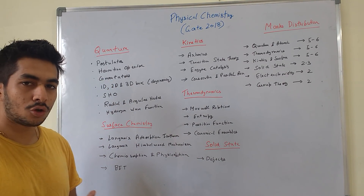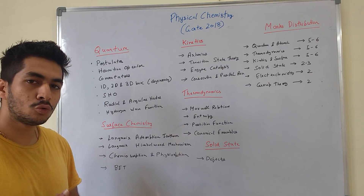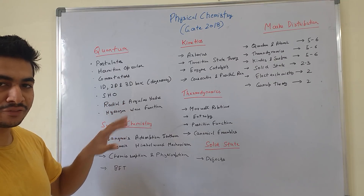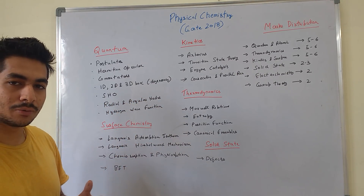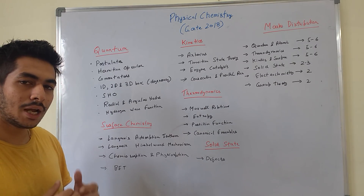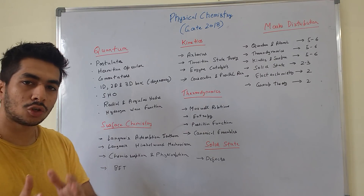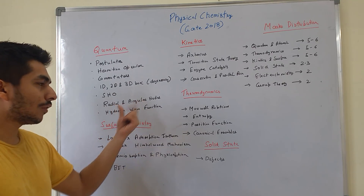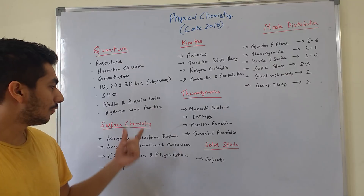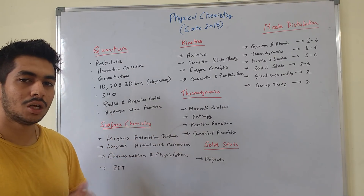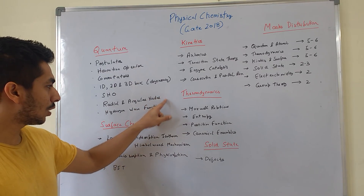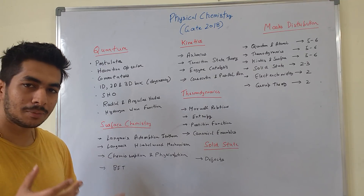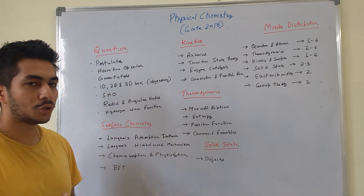All the properties of Hermitian operators you have to do really well — not the derivations, but the properties. Then commutators, again a very important topic, also relevant to the NET syllabus. Then 1D, 2D, and 3D particle-in-a-box with specific focus on degeneracy, along with wave functions for a 1D box and probability questions associated with it. Then simple harmonic oscillator (SHO) if you have the time. Radial and angular nodes using hydrogen wave functions are lower-probability topics, as GATE is more application-based than memorization-based.